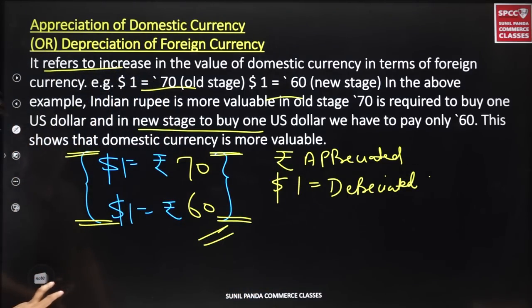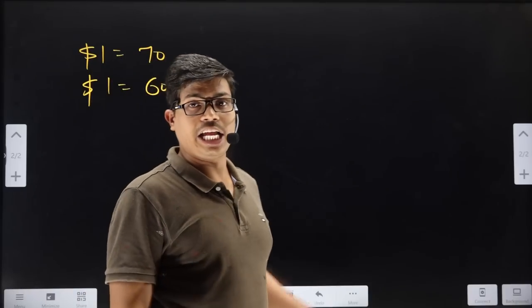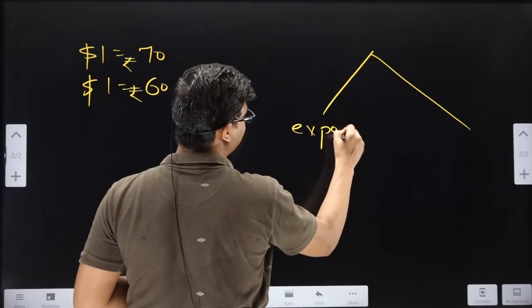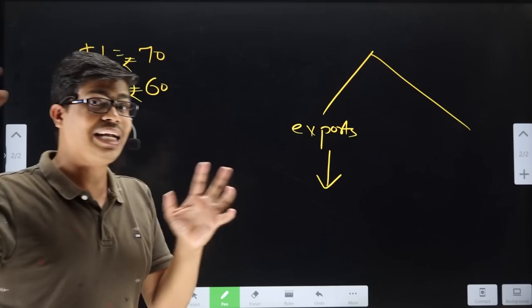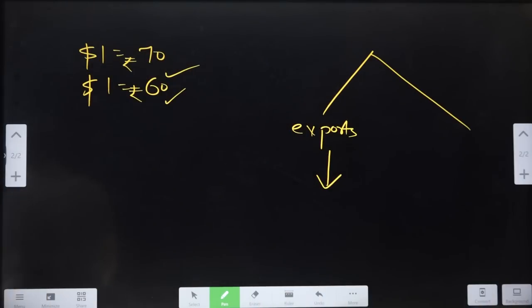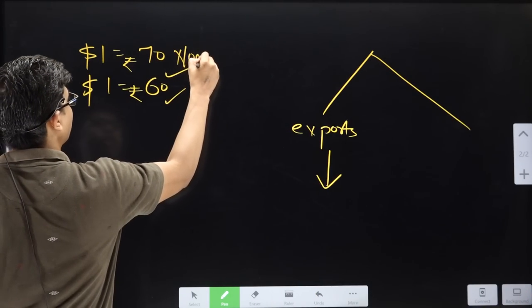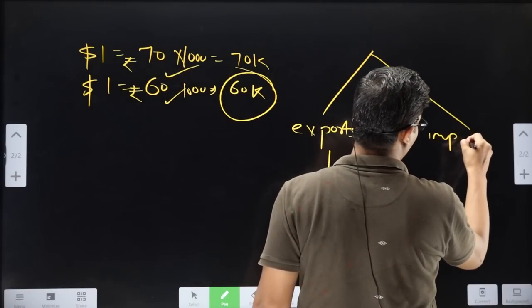Now what is the effect on export and import with appreciation? For one dollar, first 70 rupees, now only 60 rupees. Earlier Americans came to India with 1 dollar and got 70 rupees worth of goods; now they only get 60 rupees worth. So buying from India has become expensive for them, and our export will be reduced. But for Indians, importing becomes easier — before we needed 70 rupees for one dollar, now only 60, so import will increase.